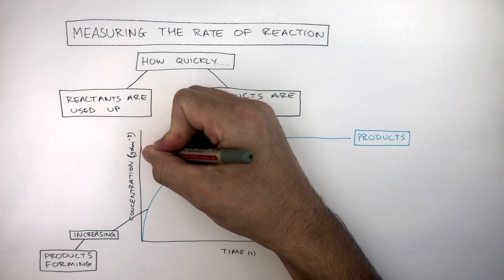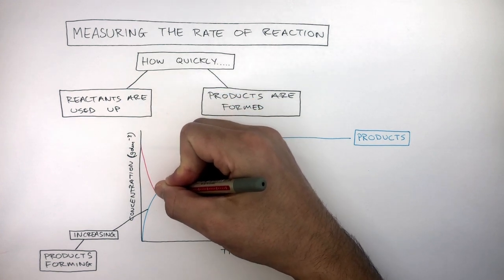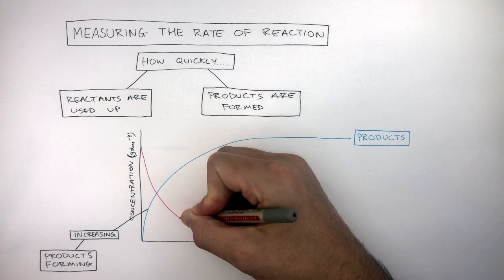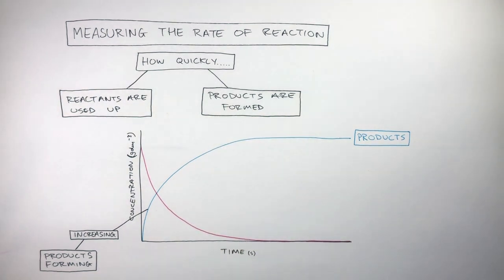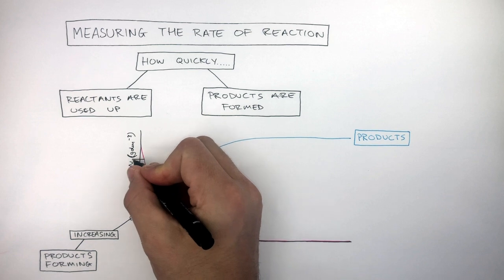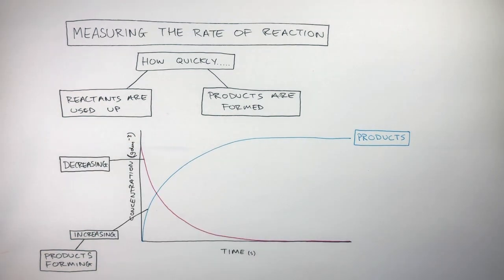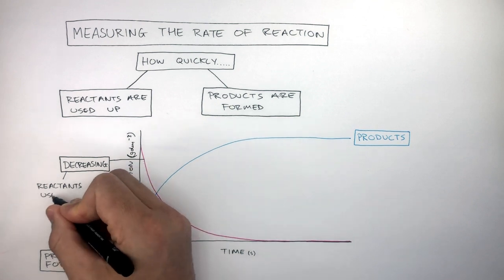This pink line starts at a higher concentration and decreases throughout the reaction until the concentration is zero. If you ever see a curve where the concentration or variable is decreasing, this means the reactants are being used up.